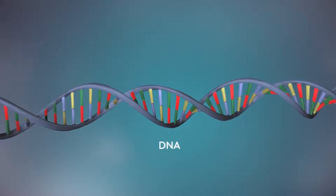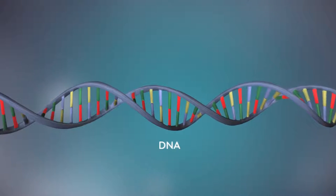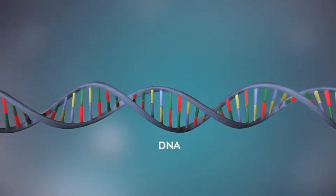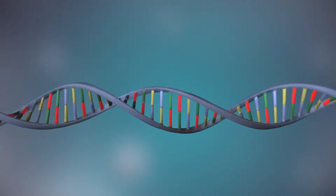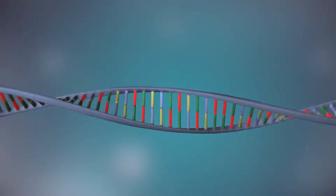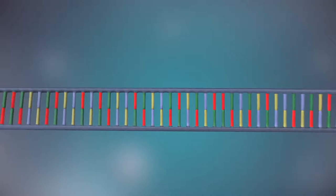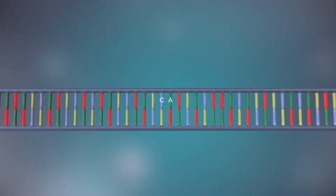DNA is a molecule made up of two strands twisted around each other in a double helix shape. Each strand is made up of a sequence of four chemical bases, represented by the letters A, C, G and T.